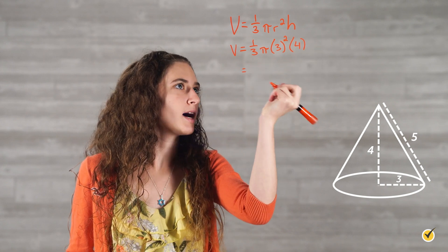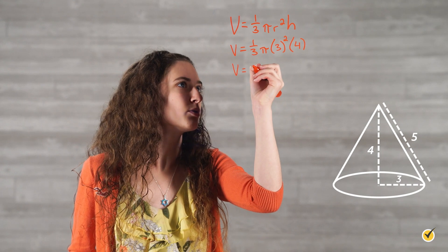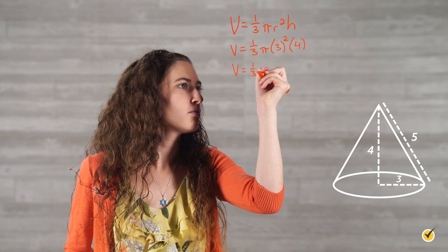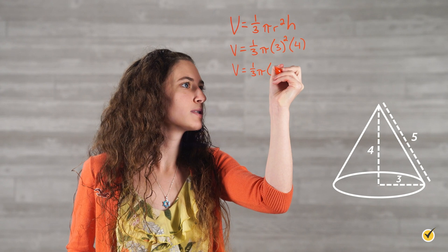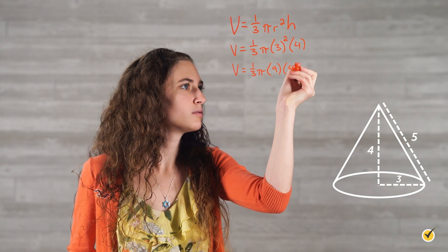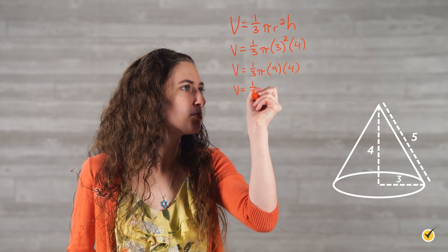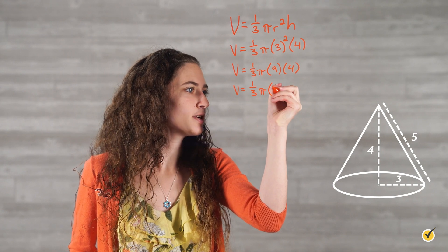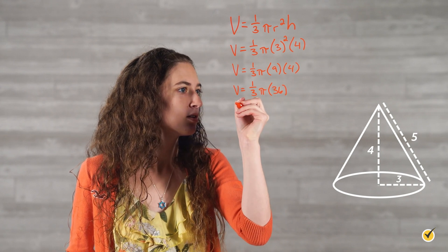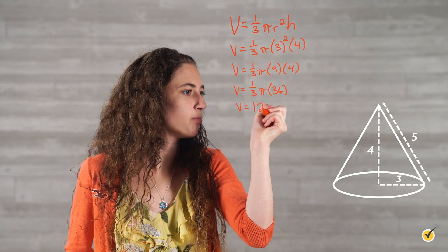When we multiply this out, we get volume is equal to one-third pi times 9 times 4, which is one-third pi times 36, which is equal to 12 pi.